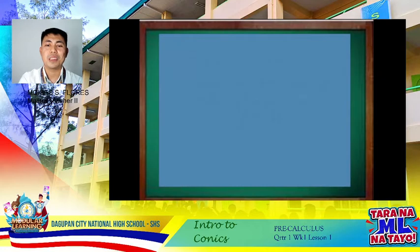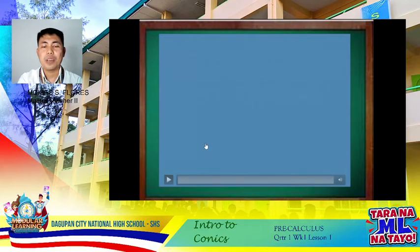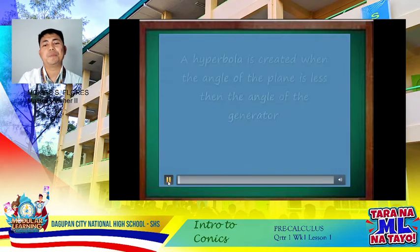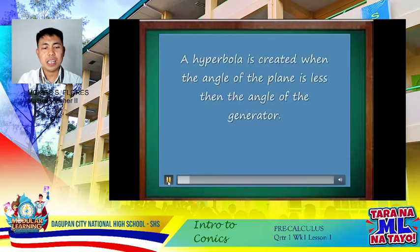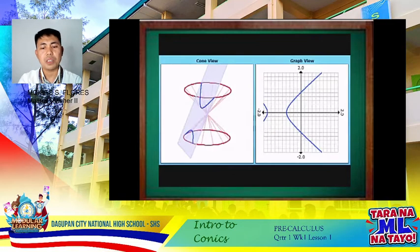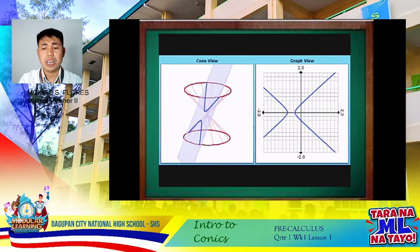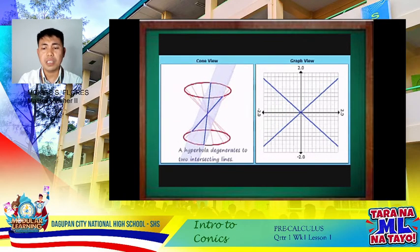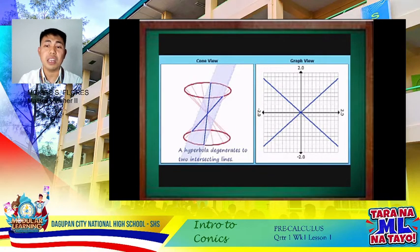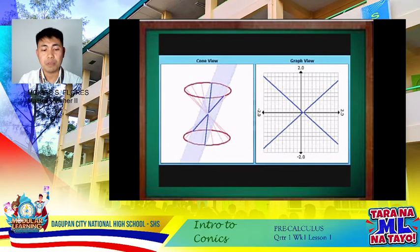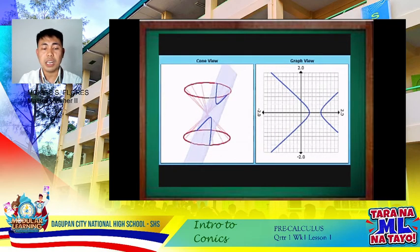Let's watch the clip on how a hyperbola forms. Observe how the hyperbola is formed as the plane moves. A hyperbola degenerates into two intersecting lines. Earlier, the parabola degenerated into a line, but for a hyperbola, it degenerates into two intersecting lines.